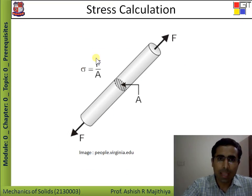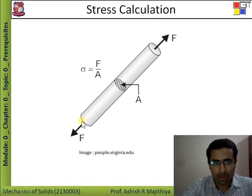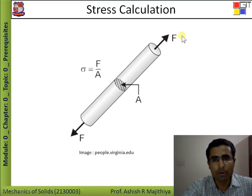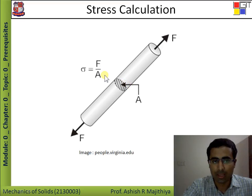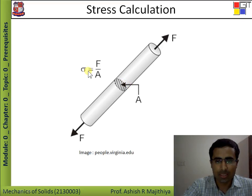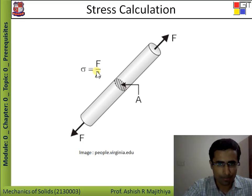How to calculate stress? A simple cylindrical bar is shown here with a tensile force being applied. If F (in Newtons) is the force acting upon it and A is the uniform cross-sectional area of the cylinder, then stress can simply be calculated as force divided by area. This is how stress is calculated.